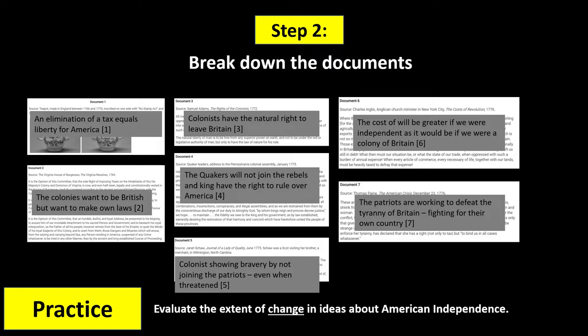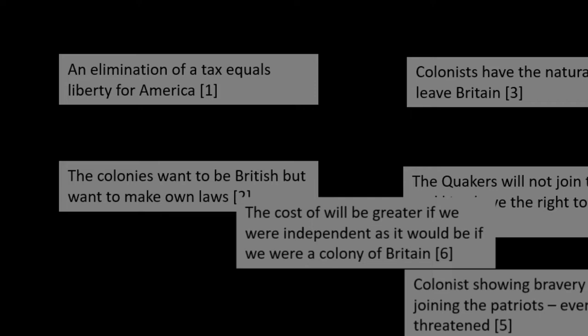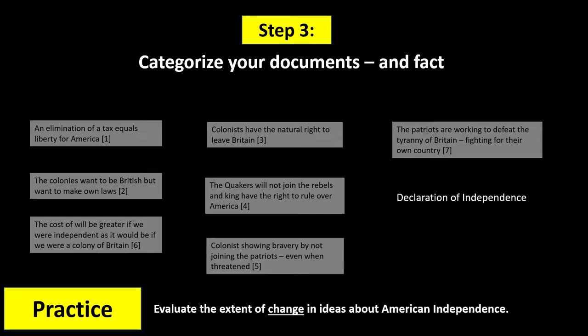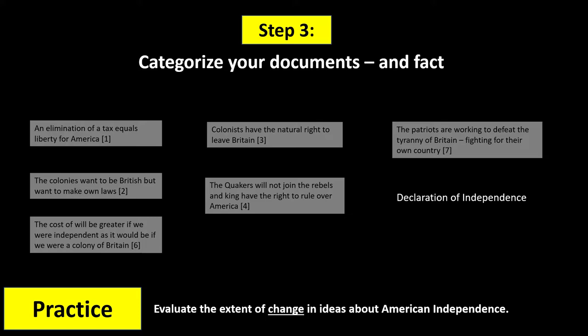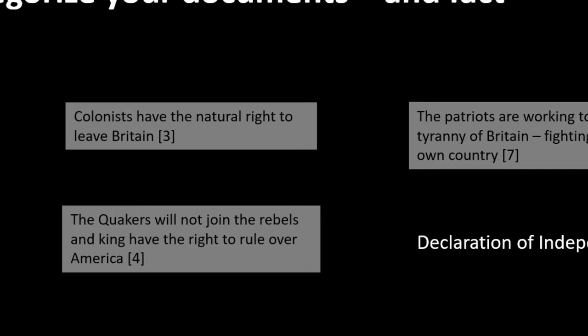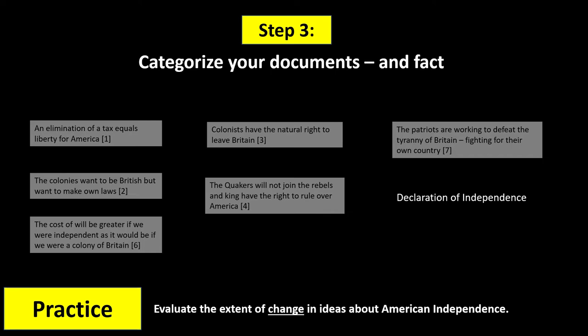Step 3: Categorize your documents and fact. The DBQ requires the student to use an additional fact outside of the documents to defend the thesis along with all the other documents. Let's categorize the documents by theme. Documents 1, 2, and 6 are similar — they all suggest staying with Britain but wanting a change in representation. Since we only need to use 6 documents and I don't fully understand Document 5, I'm going to throw that one out. Documents 3 and 4 are discussions on the rights of colonists and the rights of kings in Britain. Document 7 talks about separation from Britain and fighting against tyranny. I'll add the additional fact of the Declaration of Independence because it discusses both tyranny and separation from Britain.